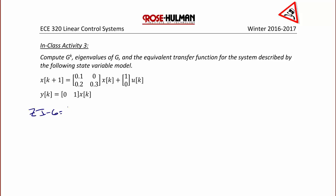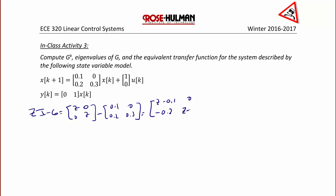zI minus G equals z times the identity matrix minus [0.1, 0; 0.2, 0.3], which gives the matrix [z minus 0.1, 0; negative 0.2, z minus 0.3]. Then we find phi of z, the inverse of zI minus G.